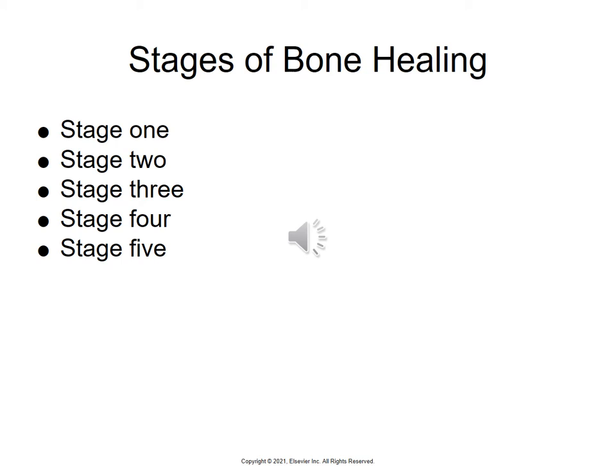The stages of bone healing are found on page 1030. Stage one occurs from day one to three after injury — a hematoma forms at the fracture site because bone is so vascular. Stage two occurs from three days to two weeks, with granulation tissue forming. Stage three is when bone healing occurs as a result of vascular and cellular proliferation. A callus forms, surrounded by new vascular tissue, within three to six weeks.